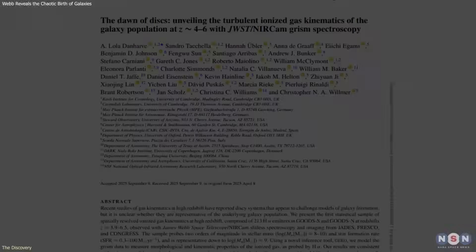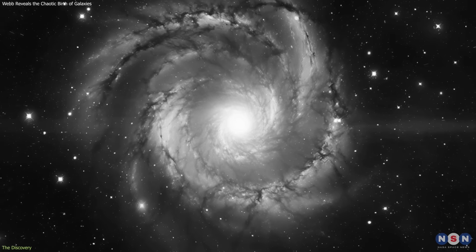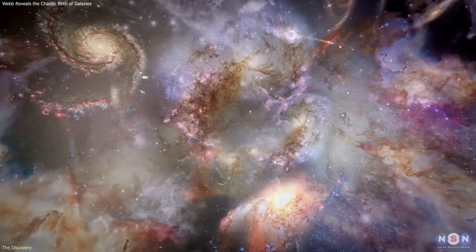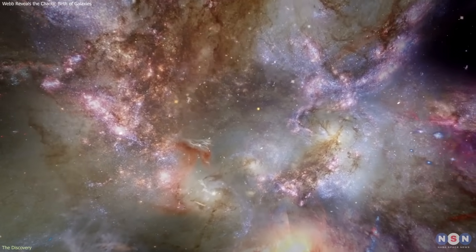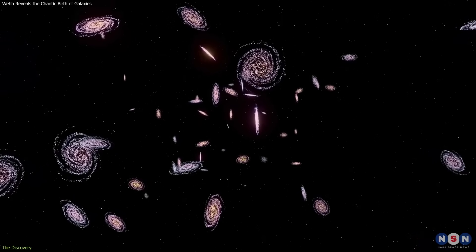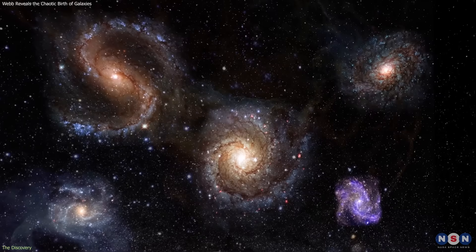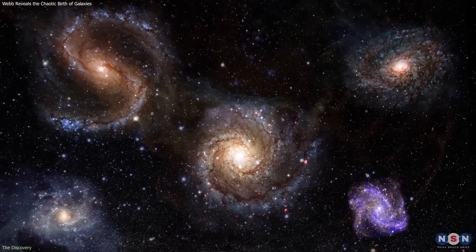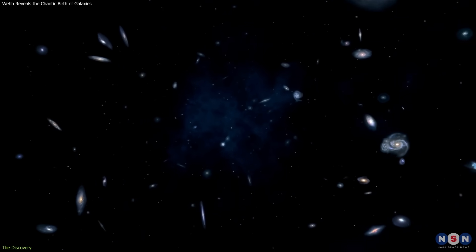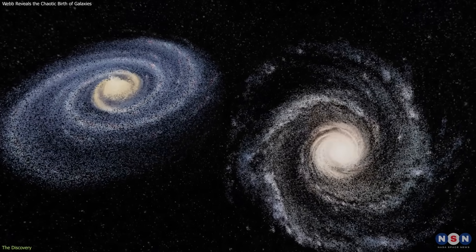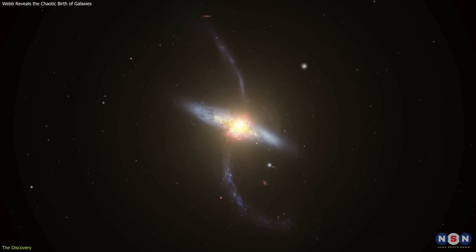The results were striking. Most galaxies didn't show the smooth rotation we associate with mature systems like the Milky Way. Instead, their gas moved in multiple directions, forming turbulent and irregular structures. Only a small fraction showed early signs of rotation. This is a major shift from earlier studies, which focused on a handful of bright, massive galaxies and gave the impression that ordered disks were common at early times. Those objects were the exceptions. The new broader sample reveals that the typical early galaxy was messy and unstable.